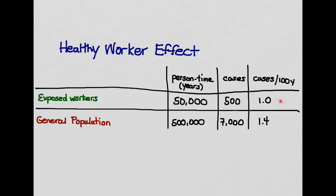And so what you see is that, despite the fact that the exposed workers are exposed, presumably more than the general population, we have a lower incidence of the disease in the exposed population. And so this is the healthy worker effect. So why does this occur?